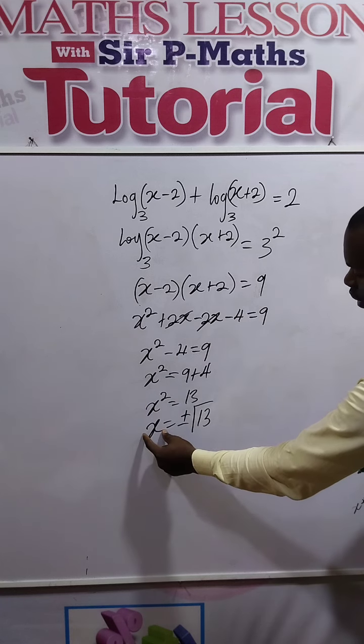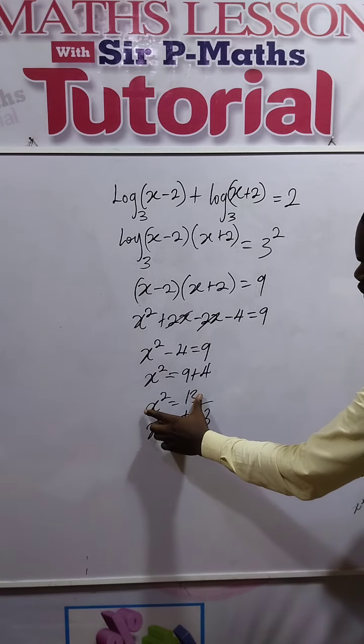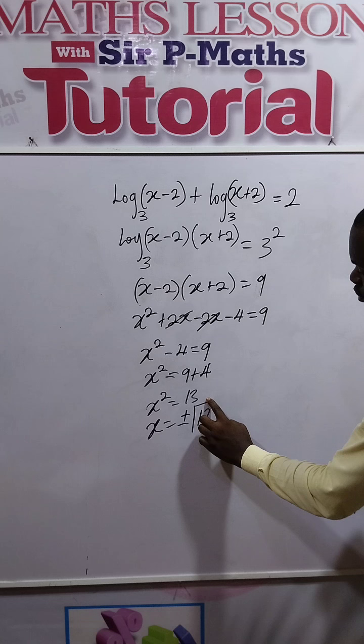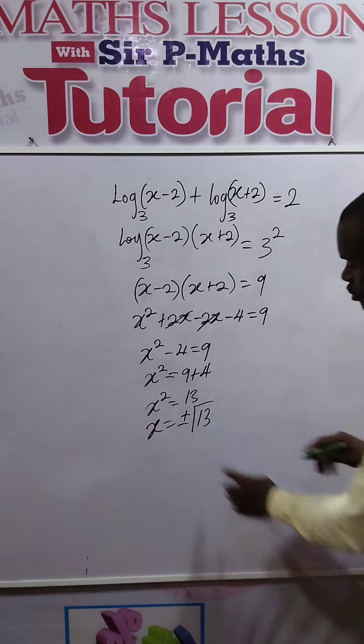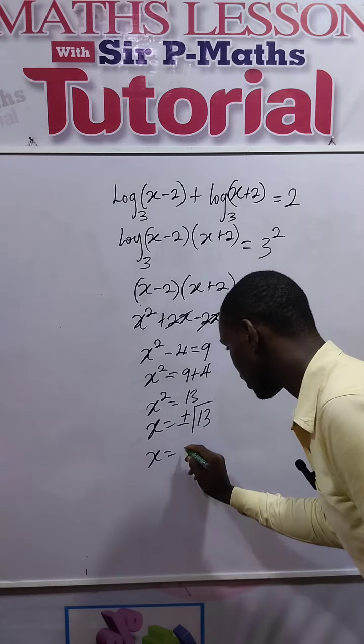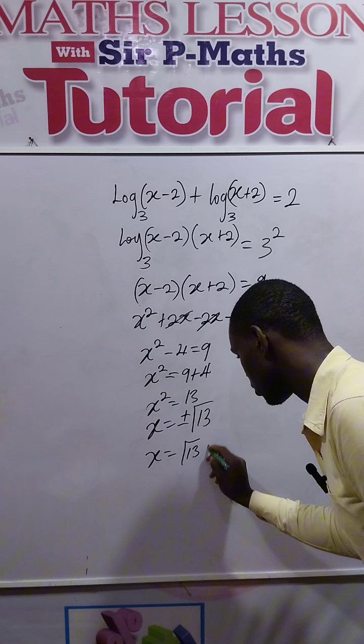So our x will either be positive √13 or negative √13. That becomes the solution.